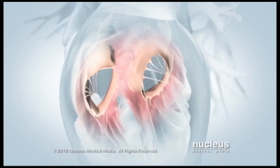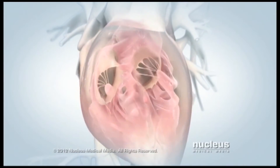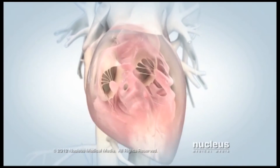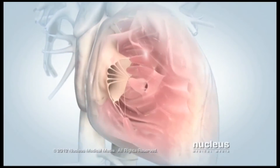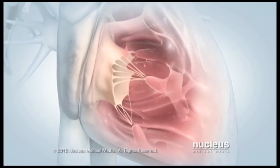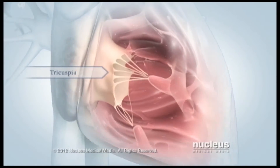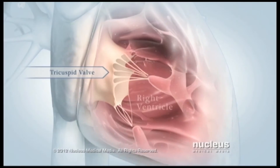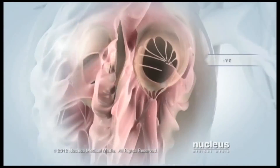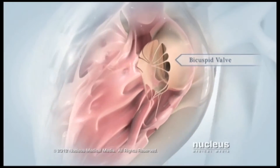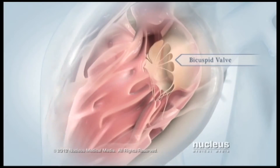Two valves sit like doors between your atria and ventricles to prevent blood from flowing backward into your atria. The tricuspid valve opens into your right ventricle, and the bicuspid valve, also known as the mitral valve, opens into your left ventricle.